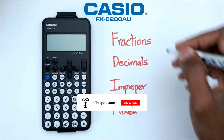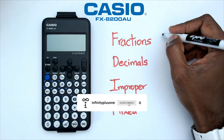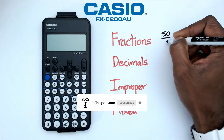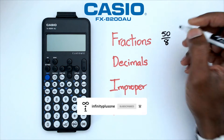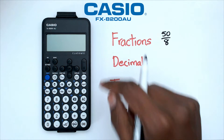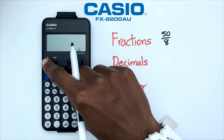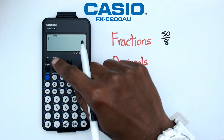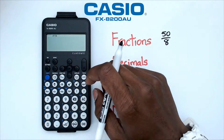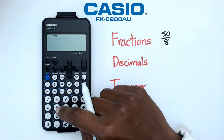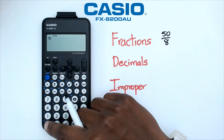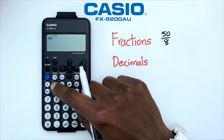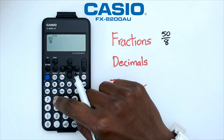For this question I'm going to be looking at the example of 50 over 8. What we're going to do is switch on the calculator, go into the normal calculate mode, and type in 50 over 8 — so we go 50, the fraction button, and 8.